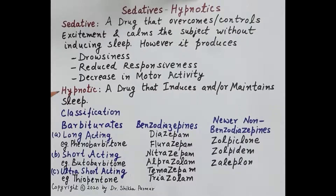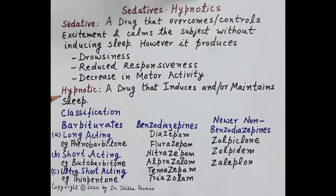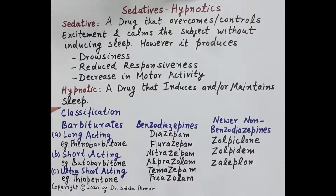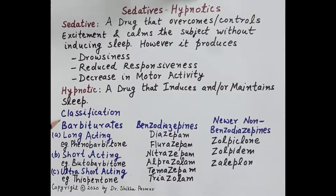A drug that induces and maintains sleep similar to normal arousable sleep is termed as hypnotic. All sedatives and hypnotics are CNS depressants. A drug may act as a sedative at lower dose and hypnotic at a higher dose. Coming to the classification of sedative hypnotics, there are three main categories: barbiturates, benzodiazepines, and non-benzodiazepines.